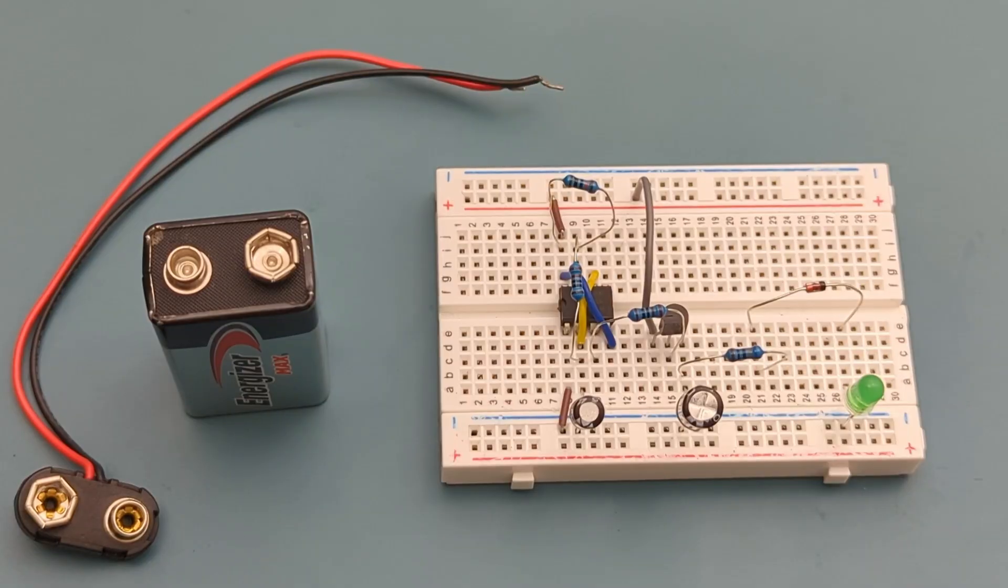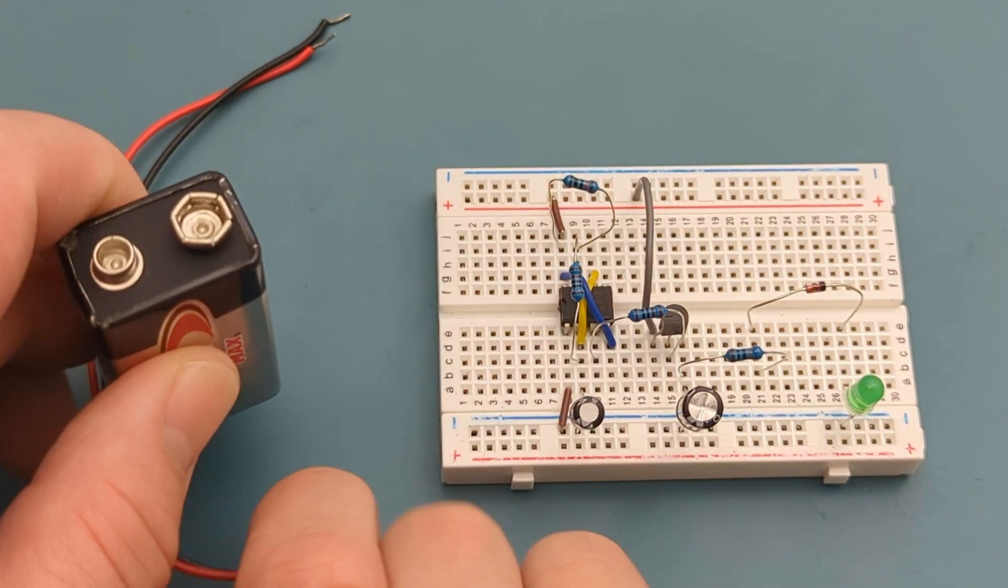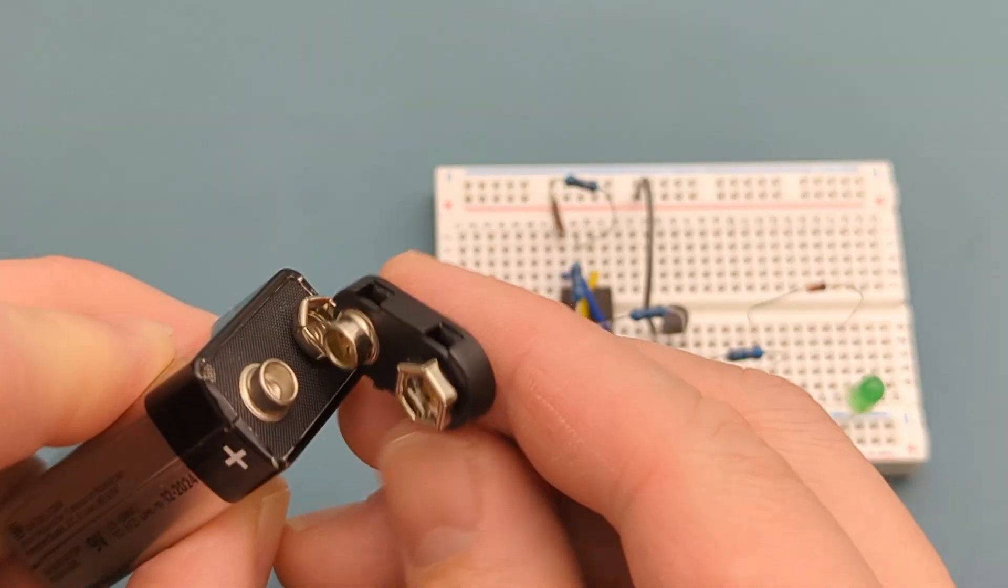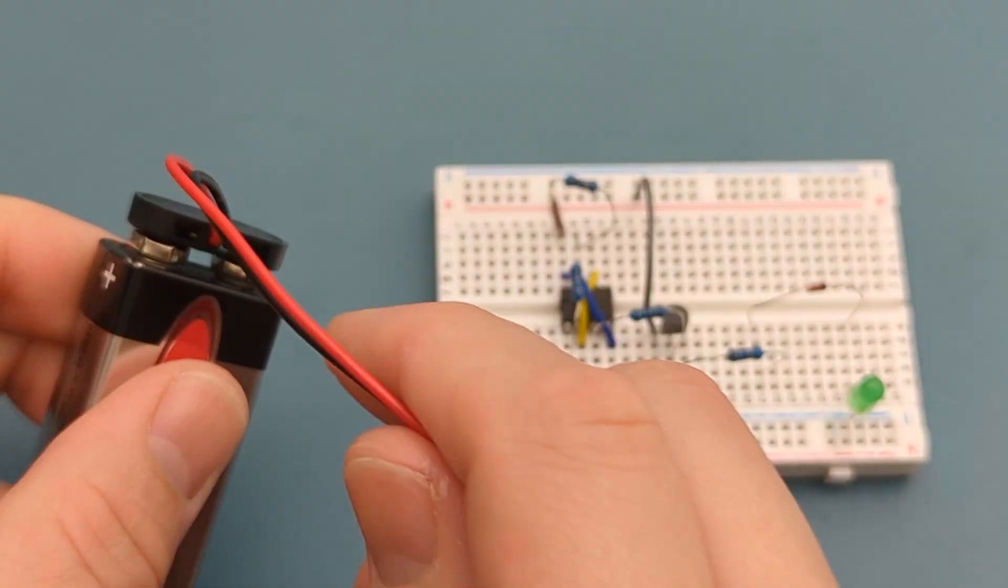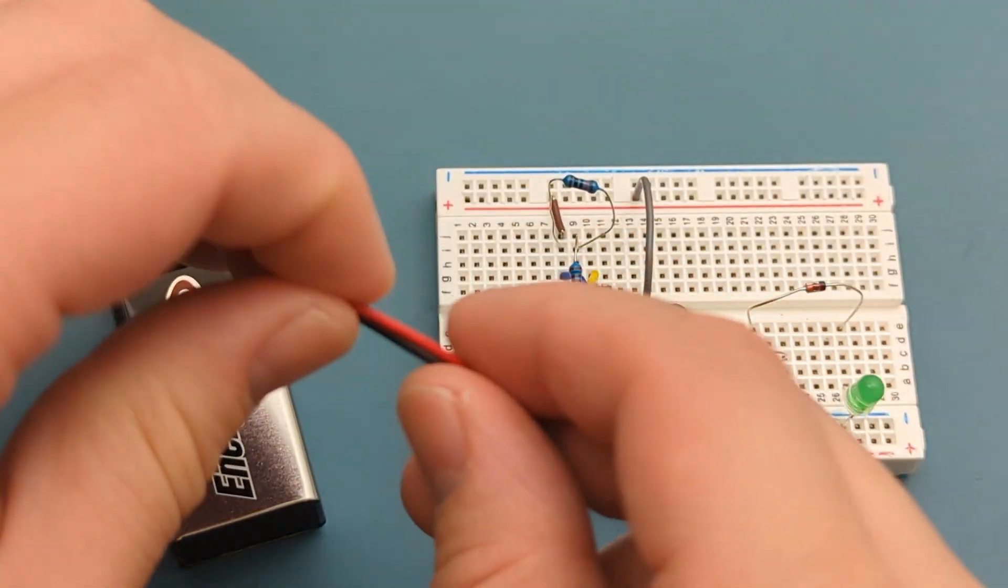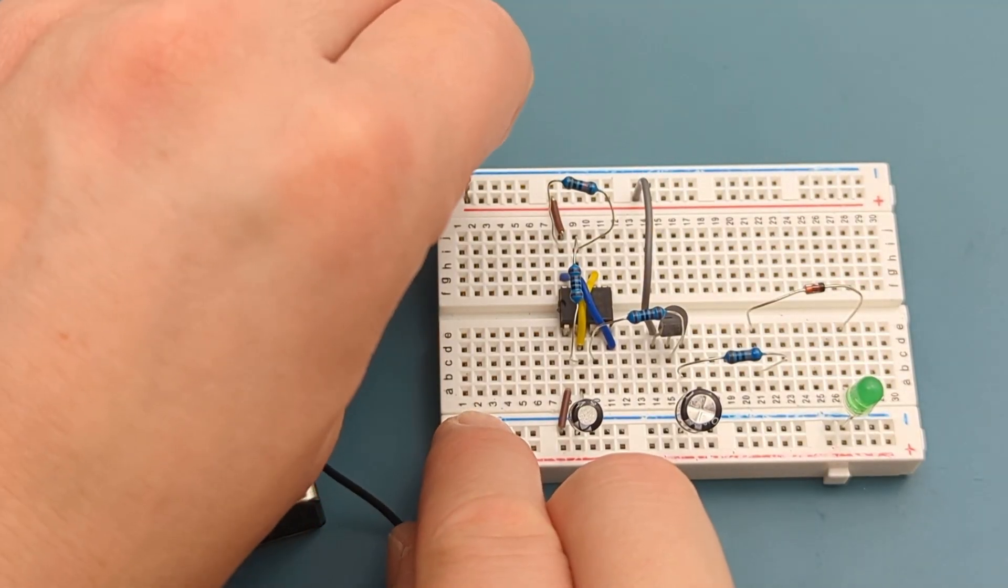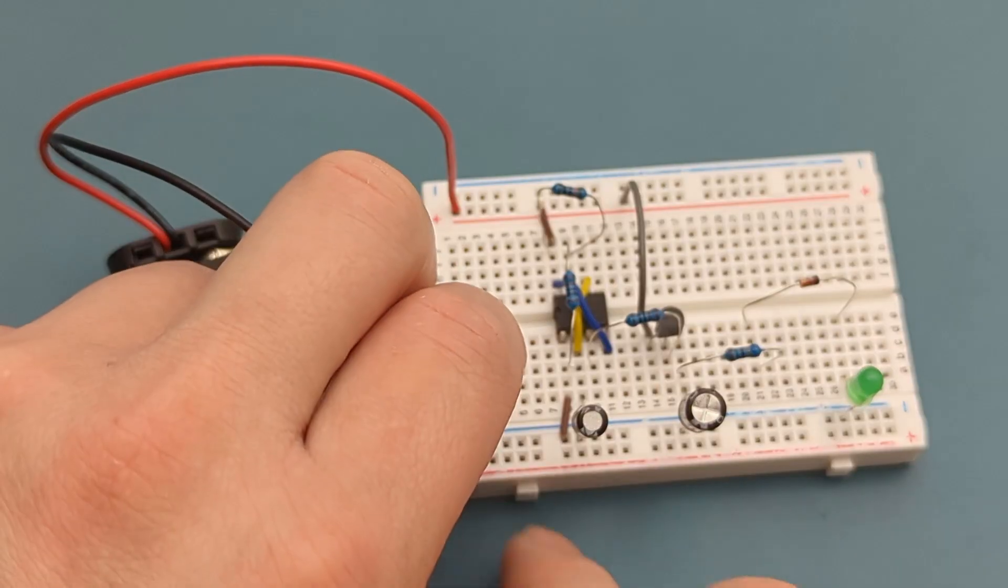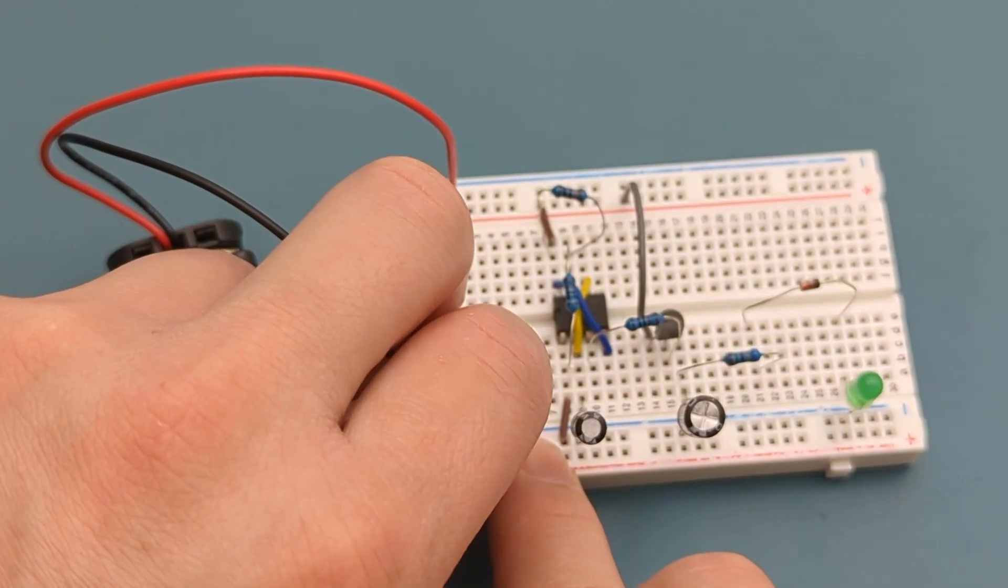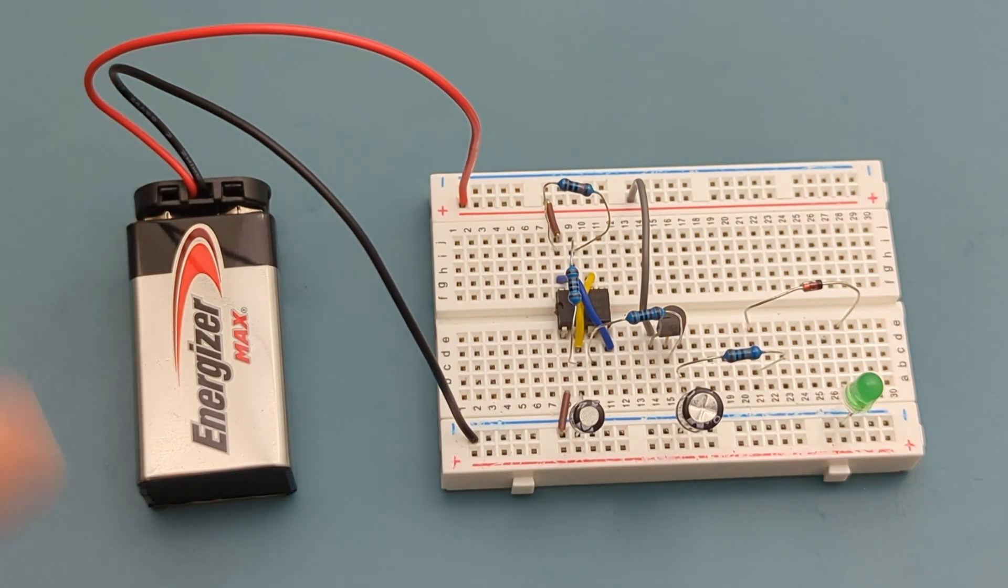Connect the 9V battery buckle connector to the 9V battery. Insert the positive lead to the positive rail. Insert the negative lead to the negative rail. We have successfully completed the circuit.